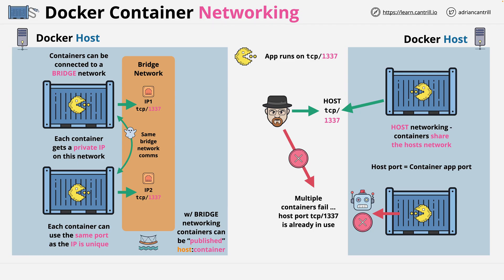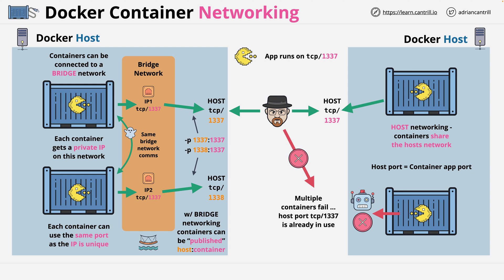For example, we could run container 1 using -p 1337:1337, and this would publish container 1 port 1337 through to host port 1337, at which point it would be accessible by Heisenberg. We can also publish container 2, but we can't use host port 1337 because that's already used. Instead, we might use -p 1338:1337, which would publish container port 1337 through to host port 1338, so our customer could also access this container. By using bridge networking and publishing containers, we're able to publish the same container to different host ports.